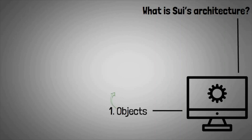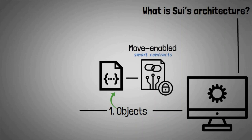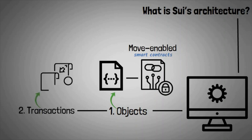First, Objects: Sway possesses programmable objects built and managed by Move-enabled smart contracts, which are referred to as objects. Second, Transactions: transactions describe any changes and updates made to the Sway ledger.